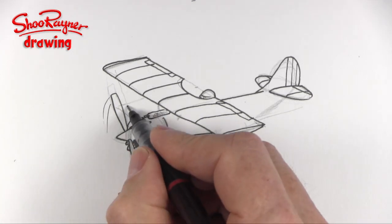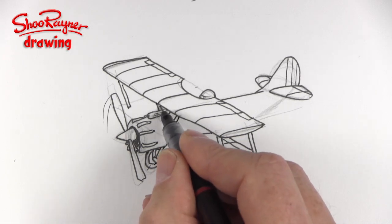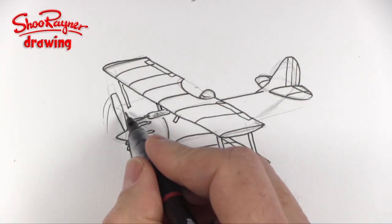Then we can put the wheel in around the back. Nearly there. I'm going to put the struts in there. We're going to need struts in there as well to hold it onto the fuselage.